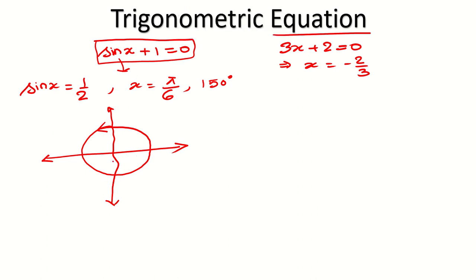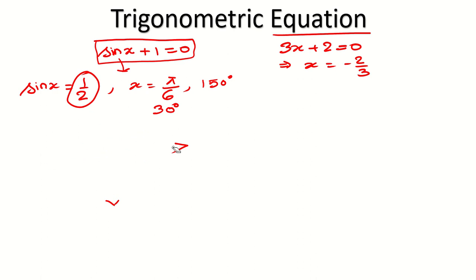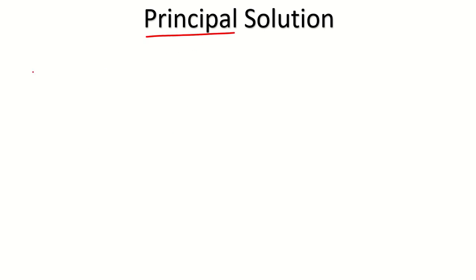To avoid all these differences in the answer — because some of you will say pi by 6 (30 degrees), some will say 150 degrees, some will say 390 degrees for sin x equals 1 over 2 — we will divide the solution into two categories. The first category will be the principal solution. Principal means main solution. All the values lying from 0 degrees to 360 degrees are called principal solutions.